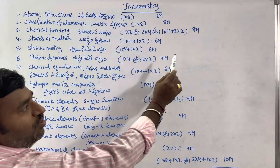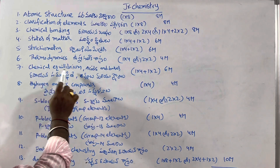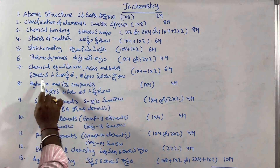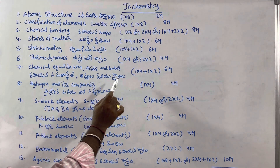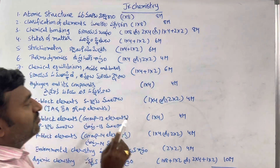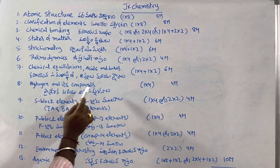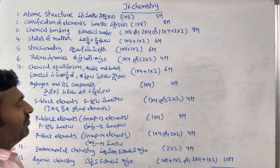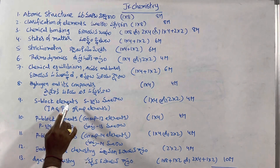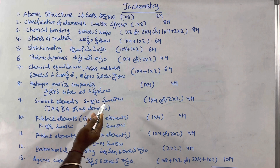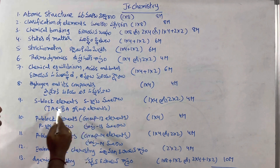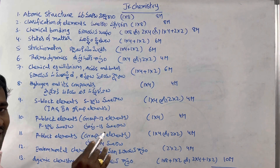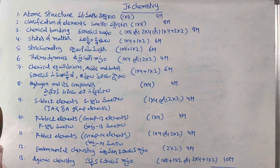Chemical Equilibrium, Acids and Bases. Hydrogen and its Compounds: 4 marks. Next, S-Block Elements — also known as 1A and 2A Group Elements, Alkali and Alkaline Earth metals.